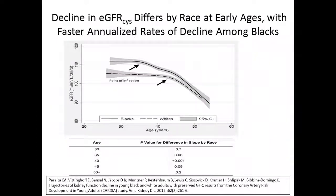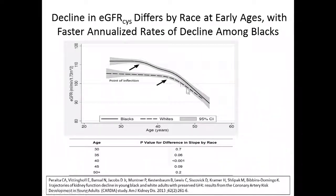My colleague Carmen Peralta published a study showing that the decline in early-stage kidney disease at early ages is faster among African Americans than whites. As measured by cystatin, blacks have a higher eGFR initially, but the rate of decline is much greater with aging — the slope is steeper — suggesting there is a higher rate of progression of disease among African Americans.